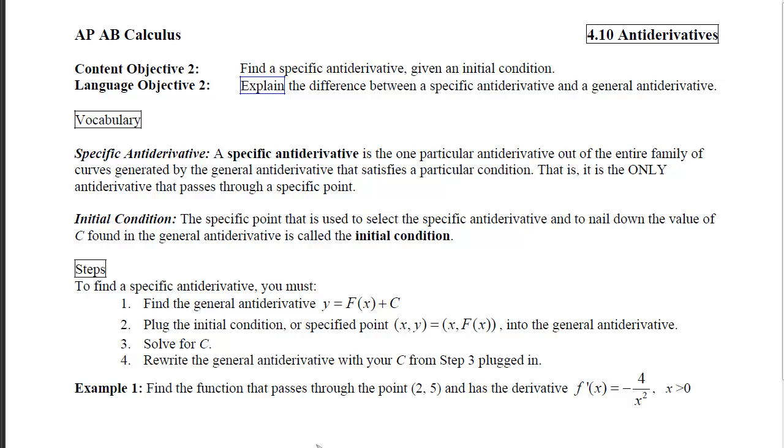So we have some steps that will help us solve these types of problems. To find a specific antiderivative, you must first find the general antiderivative, y = F(x) + C. Then we are going to plug the initial condition, or that given point (x, y) = (a, F(a)), into the general antiderivative.